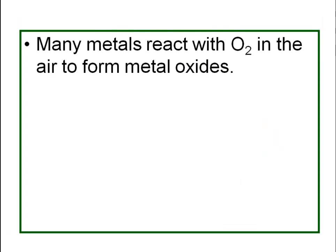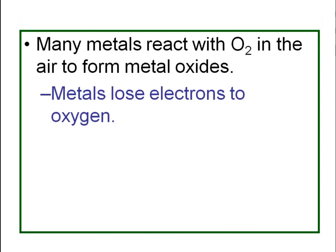Many metals will react with oxygen gas in air to form metal oxides. When this occurs, the metal loses electrons to oxygen. An example of that would be iron — like an iron nail being left outside. It's the oxygen gas that reacts with the iron nail to form iron oxide, or rust.